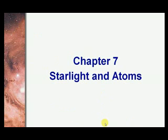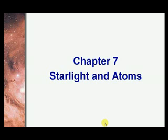Hello everybody. Today this lecture is about starlight and atoms. We're going to discuss the relation between the light coming out of stars — how this light can have characteristics caused by the atoms and components of a stellar system — through which we can know the chemical composition of a star, or properties like temperature and brightness, from its spectrum.